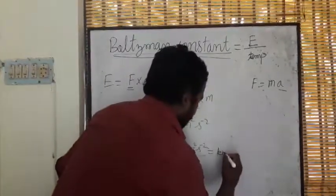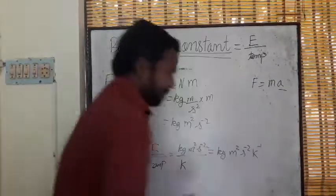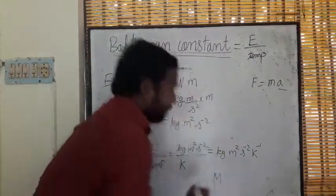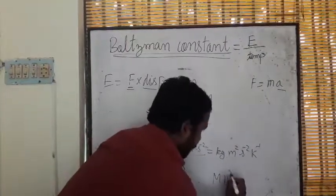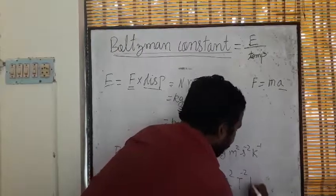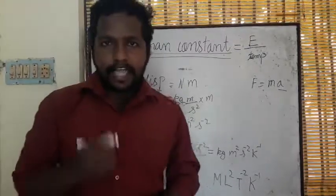So kg meter square second minus 2 Kelvin inverse. As we know, kg is M, length is L squared, time is T power minus 2, Kelvin is K inverse. This is the dimensional formula for Boltzmann constant. Thank you.